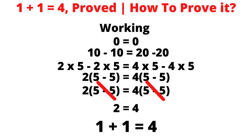We all agree that zero equals zero, so ten minus ten equals twenty minus twenty, because ten minus ten equals zero and twenty minus twenty equals zero, which is the same as zero equals zero.